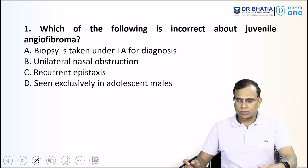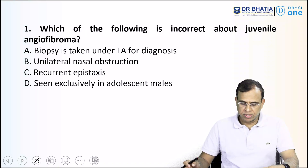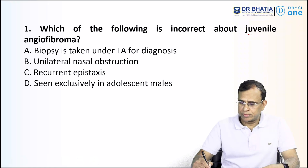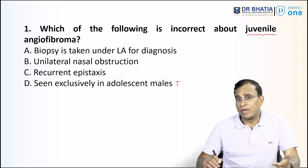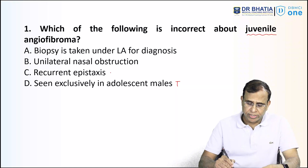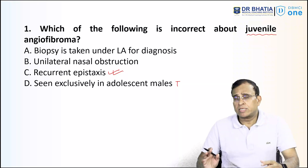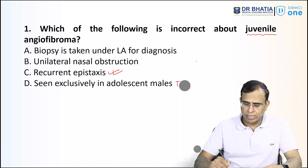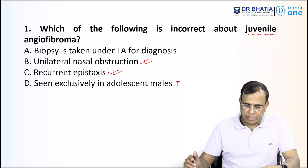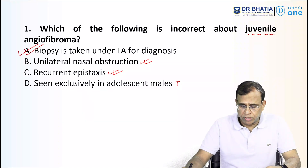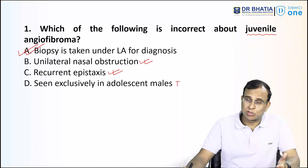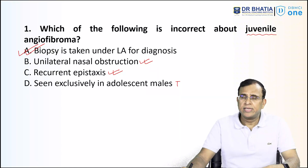Question number one asks which of the following is incorrect about juvenile angiofibroma: biopsy taken under LFO diagnosis, unilateral nasal obstruction, recurrent epistaxis, or seen exclusively in adolescent males. The name tells you it is seen in the juvenile age group, mainly in males. Recurrent epistaxis is the most common complaint as it is a vascular tumor. It arises from the sphenopalatine foramen on one side, so often causes unilateral obstruction. Biopsy is contraindicated because of the vascular nature — bleeding can be a problem. So A is the correct answer.